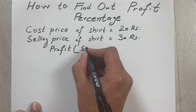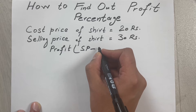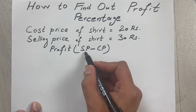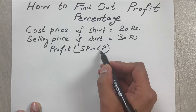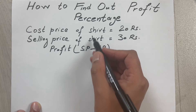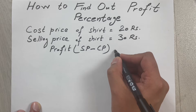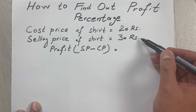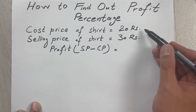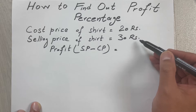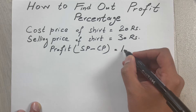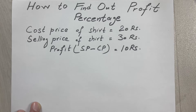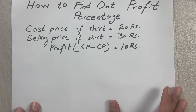Now we want to calculate how much will be the profit. The profit is selling price minus cost price — SP means selling price, CP means cost price. So when we do selling price minus cost price: selling price is 30 and cost price is 20, so 30 minus 20 equals 10. So 10 rupees is our profit.